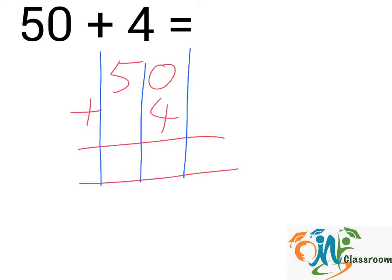Next, we will add up all the numbers in each column from the right to the left. 0 plus 4, that will give us 4. In this column, we have 5, so we will write down 5 here. And the answer will be 54.